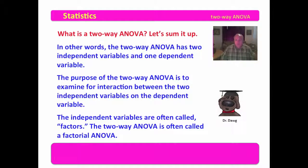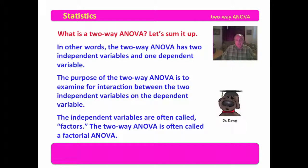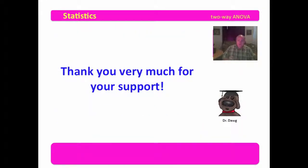The independent variables are often called factors, and the two-way ANOVA is often called a factorial ANOVA. There's a whole branch of research called canonical analysis which looks at many different factors and how they interact on a dependent variable. But this is just the introductory step into multivariate statistics, where you have two or more independent variables acting on a dependent variable. Thank you very much for your support.